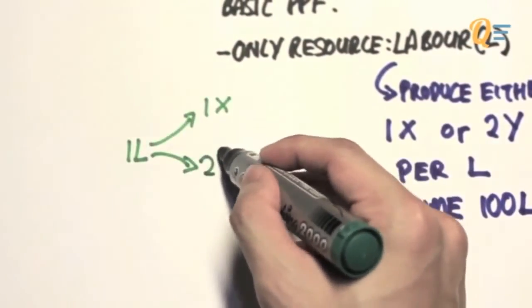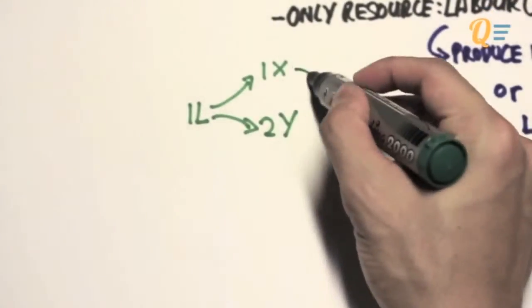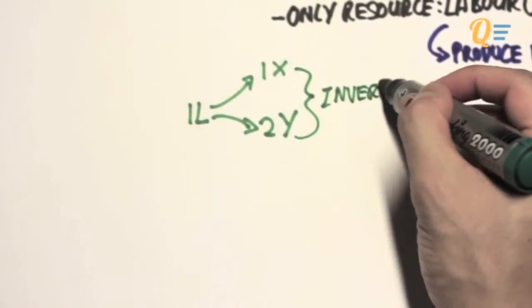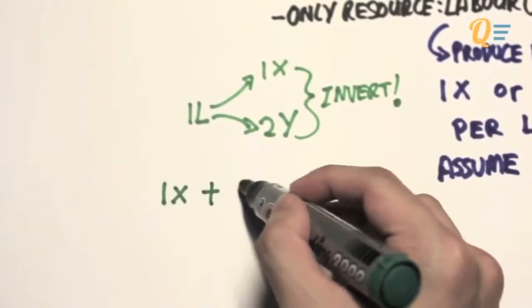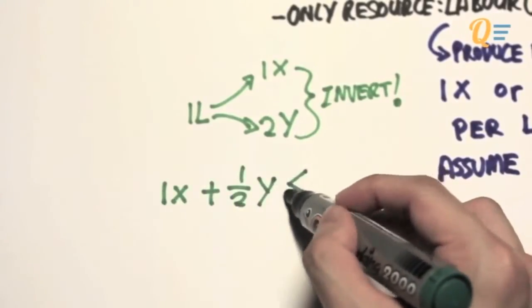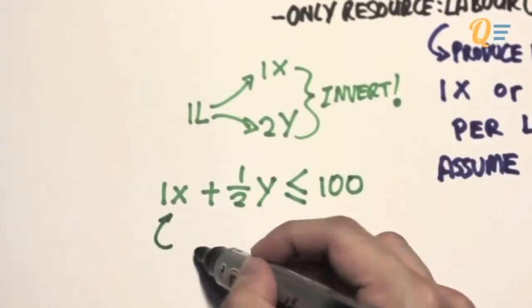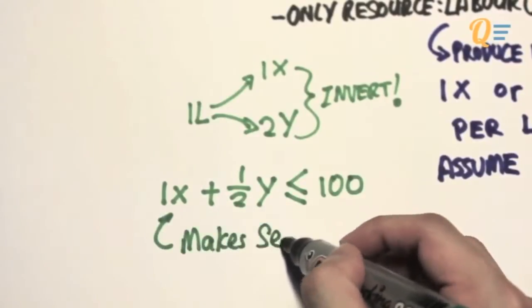Now this is important. I'm going to summarize my information as such, and I'm going to invert these numbers into an equation. Look: 1X plus half Y is less than or equals to 100. This equation here makes total perfect sense.